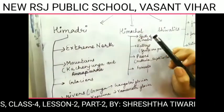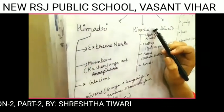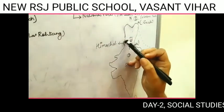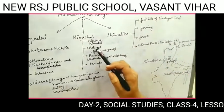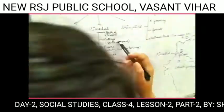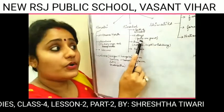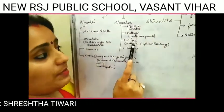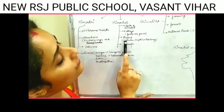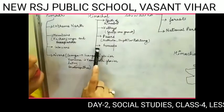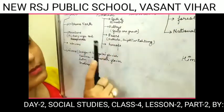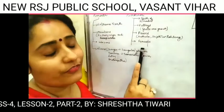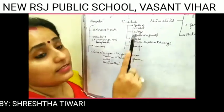Now we will learn about the Himachal range. Himachal is located at the south of Himadri. Valleys are found here, where fruits like apple, pear, and plum are grown. There are also famous mountain passes covered with ice, such as Nathula, Shipkila, and Rohtang. Forests are also found in the Himachal range due to big trees and many rivers, supporting good growth of forests, fruits, and vegetables.